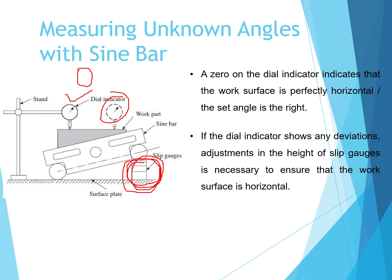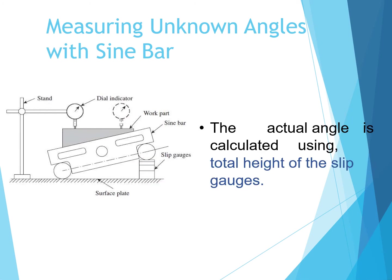Once the dial indicator reads zero, note down the height of the slip gauge. The actual angle is then calculated using the total height of the slip gauge. The distance between the centers L is already known, and with the height H obtained from the slip gauges, find out angle theta: sine theta equals H divided by L.